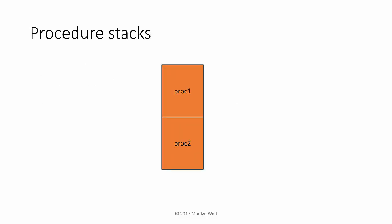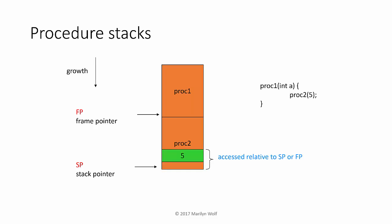Here we have two procedures that are in the process of being called. The growth of the stack in this figure goes from top to bottom. The frame pointer points to the end of the last procedure frame, and the stack pointer points to the end of the current procedure frame. The difference between the two tells us the size of proc two's stack frame, so we can access variables in proc two relative to the stack pointer. When we exit proc two, we use saved values to restore the stack pointer and frame pointer for proc one.